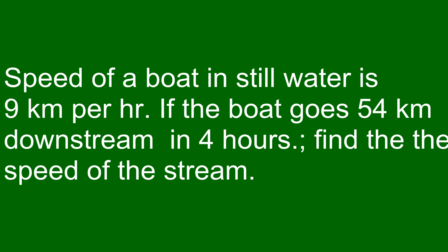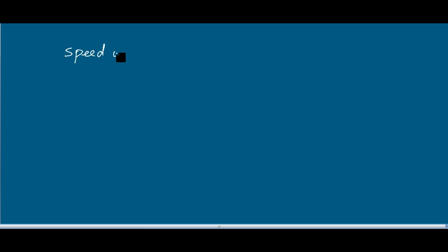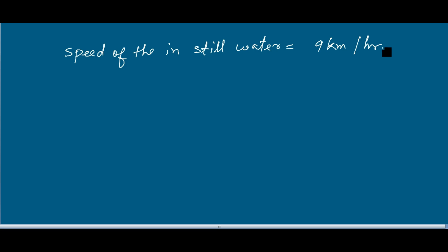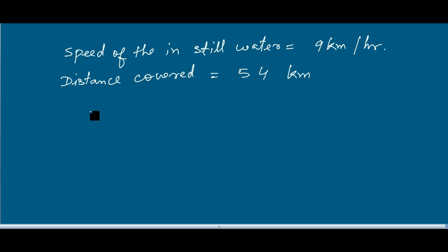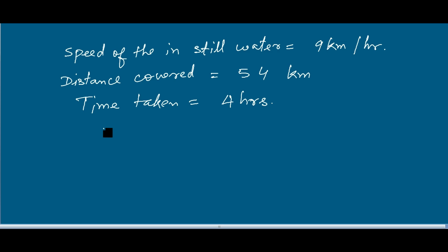The speed of the boat in still water is equal to 9 kilometers per hour. The distance covered by the boat is 54 kilometers and the time taken is 4 hours. We have to find the speed of the stream.